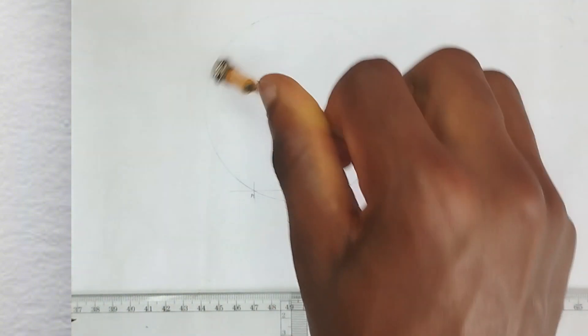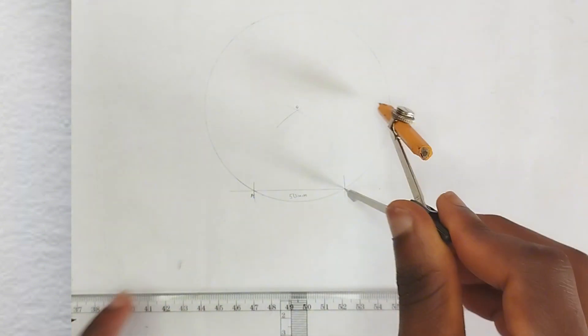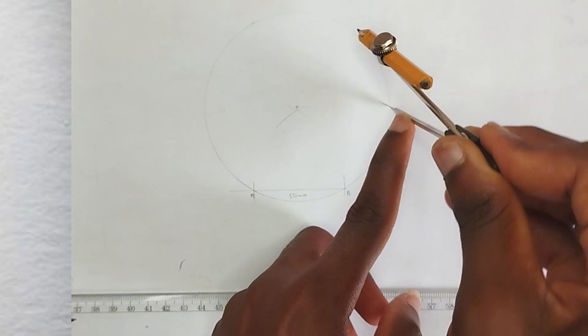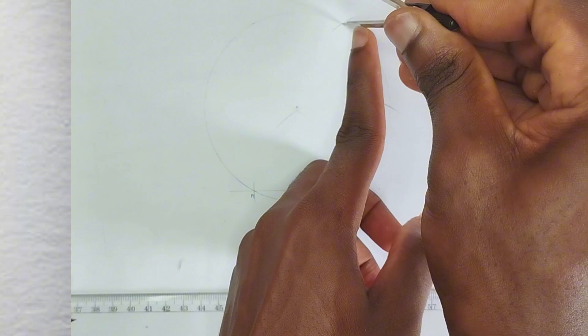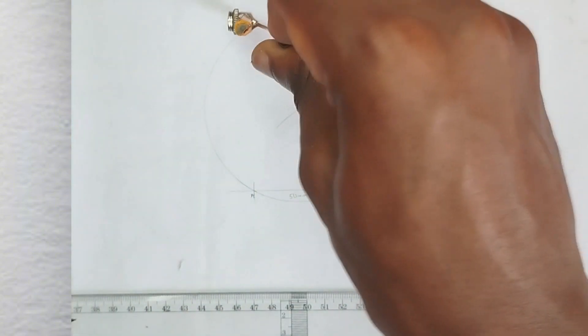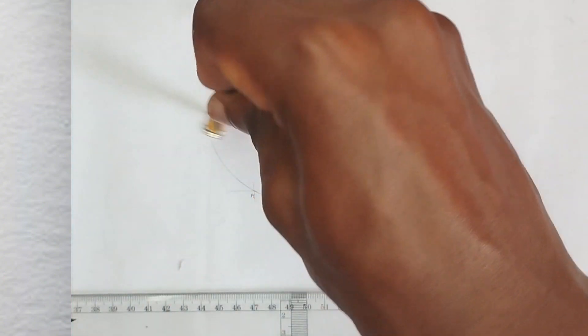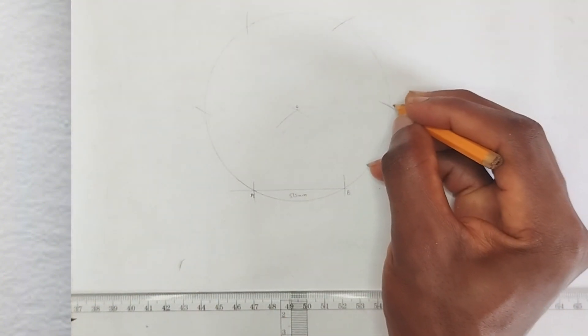So now placing our compass at point B with the same length of 50 millimeter, we strike an arc here. Then place it at that point and strike another arc. Place it at this point, also strike another arc like this. Place it at this point, strike another arc.